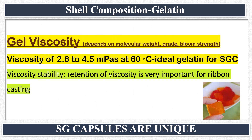Gel viscosity depends on molecular weight, grade, and bloom strength — these properties are interdependent. Molecular weight affects gel viscosity; gel viscosity affects bloom strength; bloom strength affects gel viscosity. Generally, a viscosity of 2.8 to 4.5 mPas at 60°C is ideal for soft gelatin capsules. Retention of this viscosity is very important for ribbon casting — if viscosity decreases or increases, ribbon formation will not be uniform and will impact the capsules. This is referred to as viscosity stability.